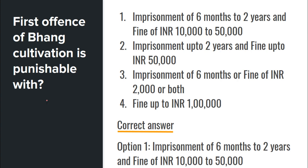Next: First offense of bhang cultivation is punishable with? This provision is under Section 34 subsection 1. Clause C deals with bhang. Please memorize all the clauses from (a) to (h) listed there, as they can ask about any clause. For the first offense, minimum punishment is six months imprisonment, which may extend to two years; or a fine of minimum 10,000, which may extend to 50,000. So option 1 is correct.